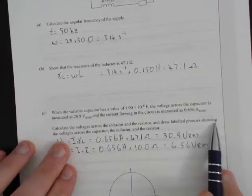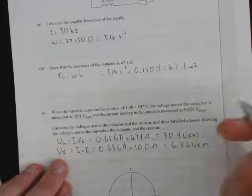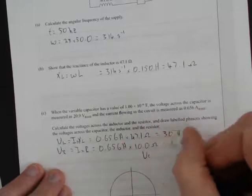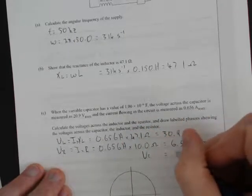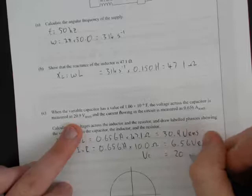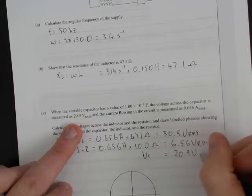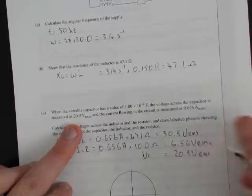Second part: draw the labeled phasors showing the voltages across the capacitor. Let's write VC down here as well. VC is equal to 20.9 volts RMS.